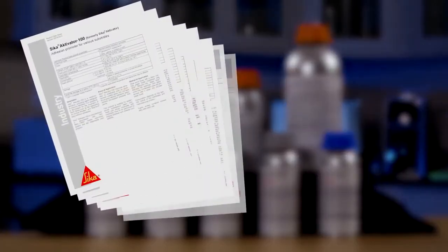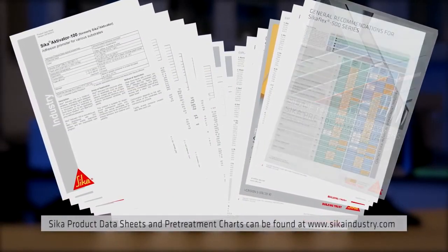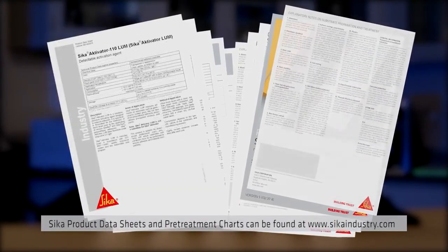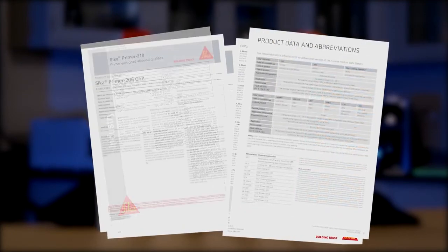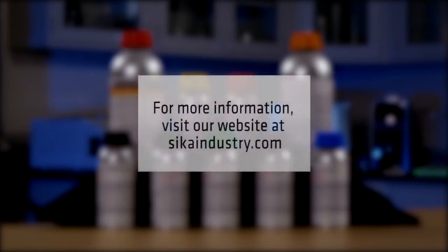Cica product data sheets and Cica pretreatment charts offer a general guide for the preparation of substrates prior to bonding. These documents also contain very important and useful information about substrate characteristics. In any case, it is mandatory to evaluate suitable surface preparation procedures by testing with original substrates. Please contact Cica Technical Service for more information or visit our website at cicaindustry.com